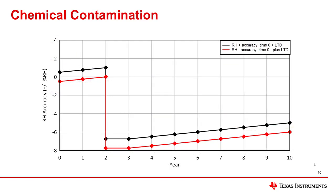This graph illustrates the effect of chemical contamination on a humidity sensor. In year two, the sensor was exposed to a contamination event, which can add much more relative humidity error than a device would generally accumulate over a 10-year lifetime. The effect of contamination is added to the normal effects of long-term drift so that the sensor lifetime accuracy from time zero can be appropriately represented.